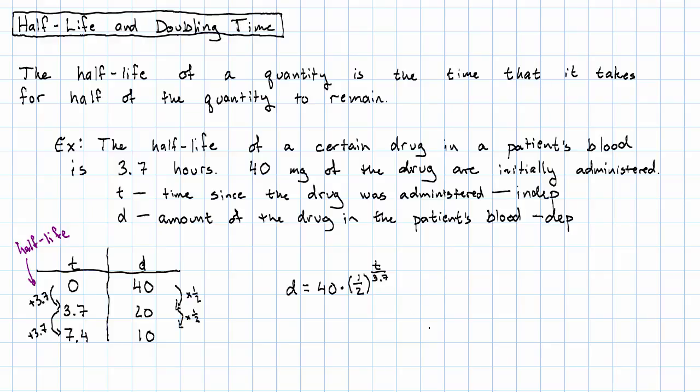So t over 3.7. When we're working with a half-life, our multiplier is always a half, and our exponent is always time over the half-life. Obviously, this only works when our dependent variable is getting smaller.